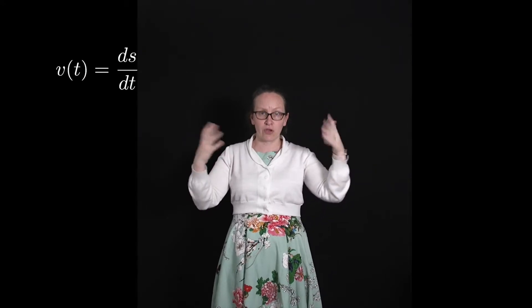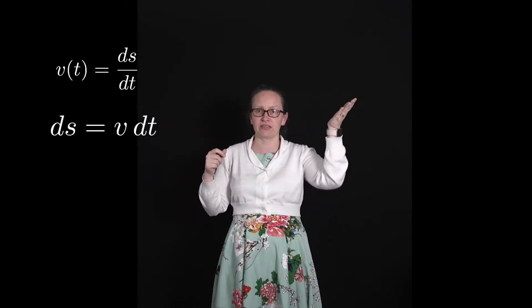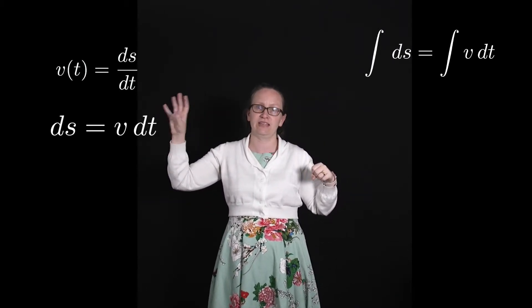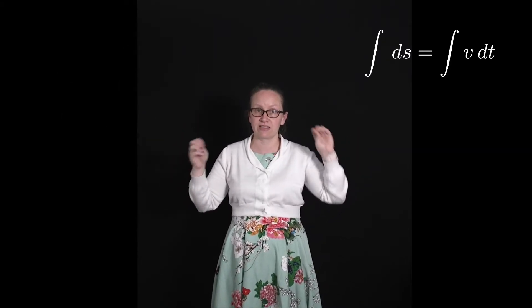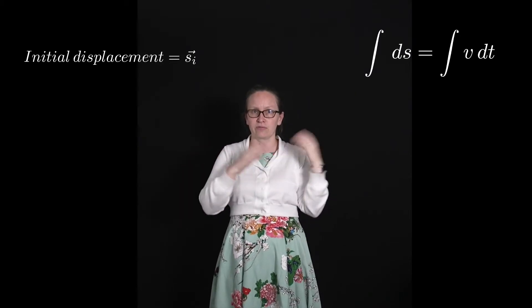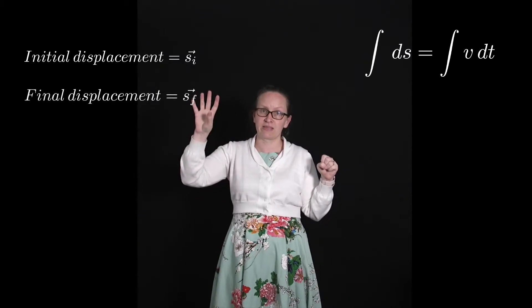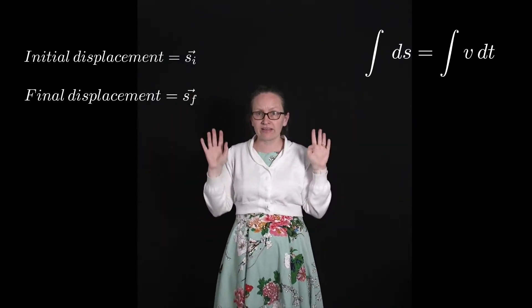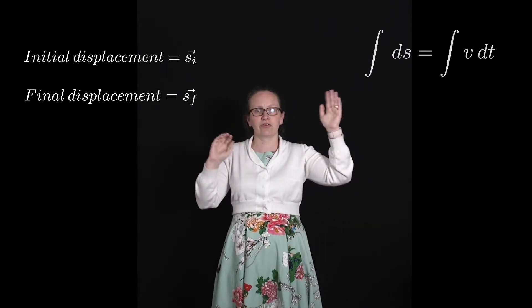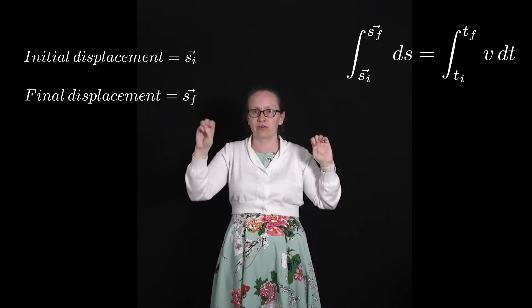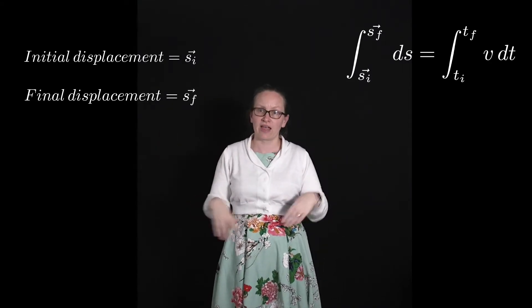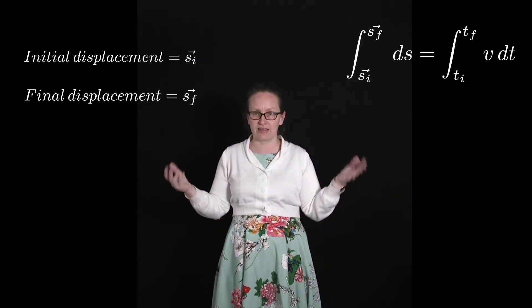We can do a similar thing to work out the displacement if we know the velocity. We know that velocity is equal to ds/dt, so we can rearrange this to get ds equals v dt, and we're going to have to integrate this. At some initial time, the initial displacement is given by s_i (a vector), and at some final time t_f the displacement is s_f (also a vector). So the integral of ds from s_i to s_f equals the integral from t_i to t_f of v dt. If we know what v is, we can solve this to find an expression for the displacement of the object at any time.